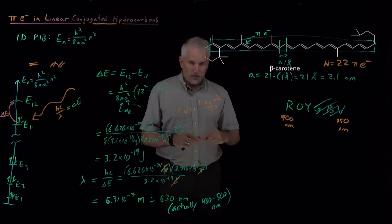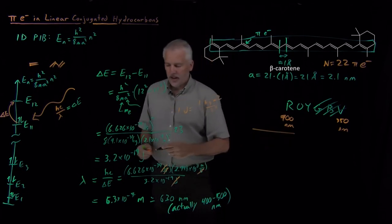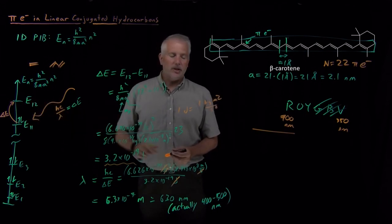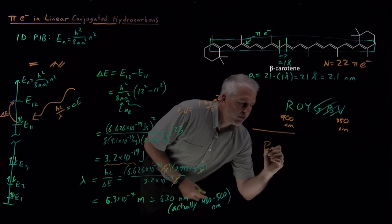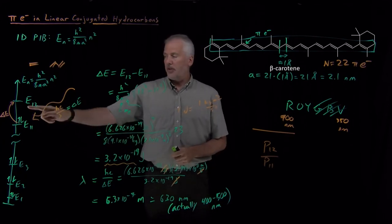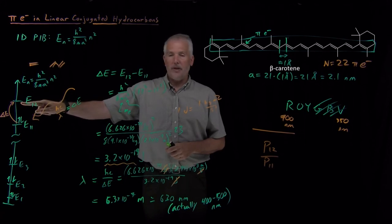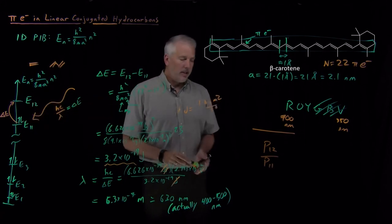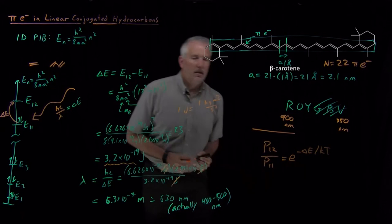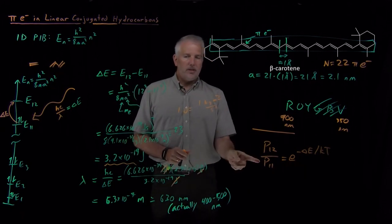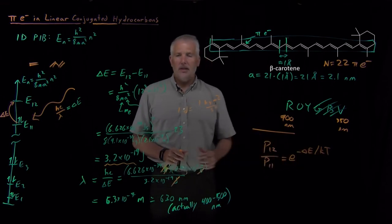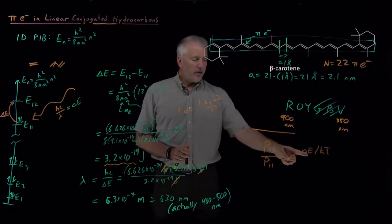We're going to do one more thing, actually, before we stop. Since we've calculated the energies, the difference in energy between energy level 11 and energy 12, I can do one more calculation relatively easily, which is to ask myself, what is the probability that a pi electron in this molecule will occupy the 12th energy level relative to the 11th energy level? And that takes us back to the Boltzmann distribution. That ratio of two probabilities, the relative occupation of the 12th level compared to the 11th level, is this e to the minus difference in energy between states relative to kT.